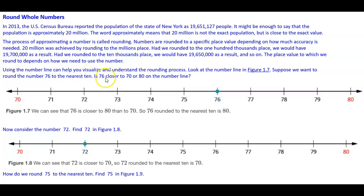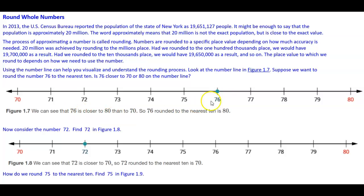Using a number line can help you visualize and understand the rounding process. Look at the number line in the figure below. Suppose we want to round the number 76 to the nearest 10. Is 76 closer to 70 or 80 on the number line? You can see that 76 is closer to 80 than it is to 70, so 76 rounded to the nearest 10 is 80.